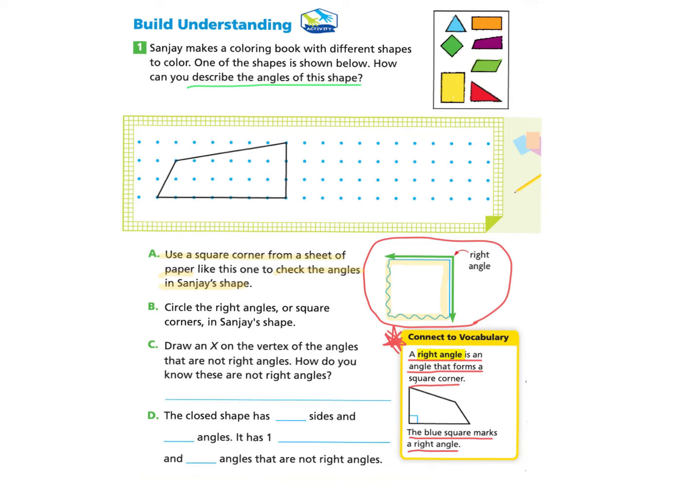Let's take a look at part B: Circle the right angles or square corners in Sanjay's shape. You can pause and try this on your own or follow along with me. The first thing I'm going to do is circle this right angle, because that was the angle where I could line up a square corner from a sheet of paper and it fit perfectly — so I know that's a right angle.